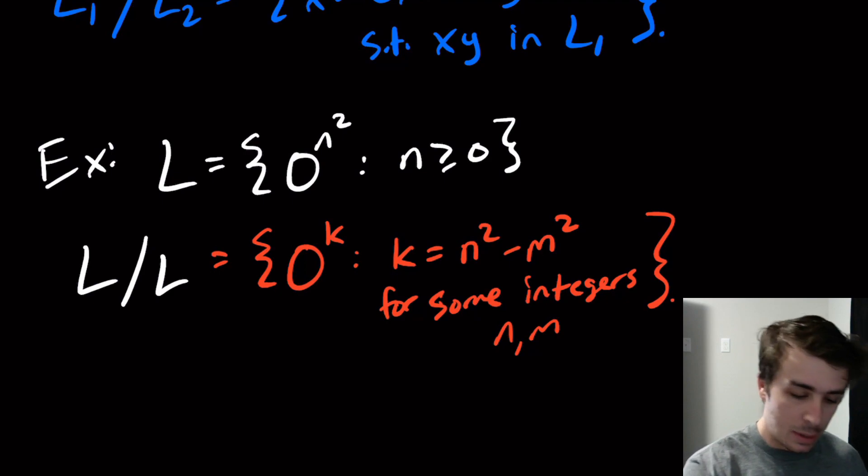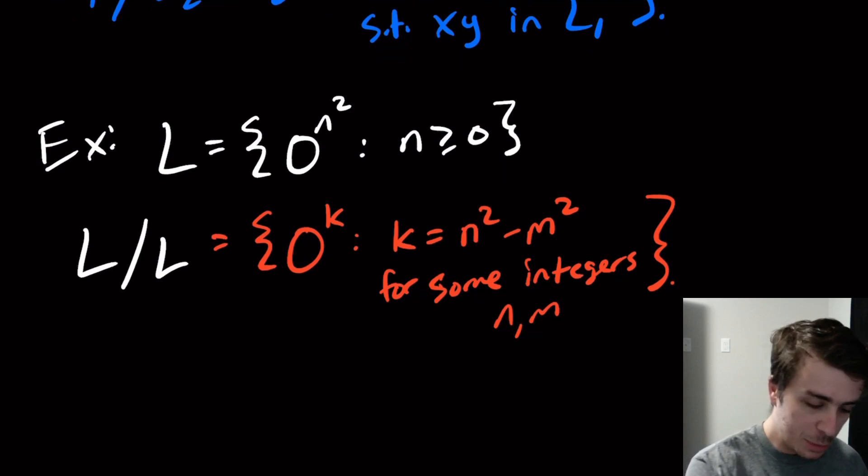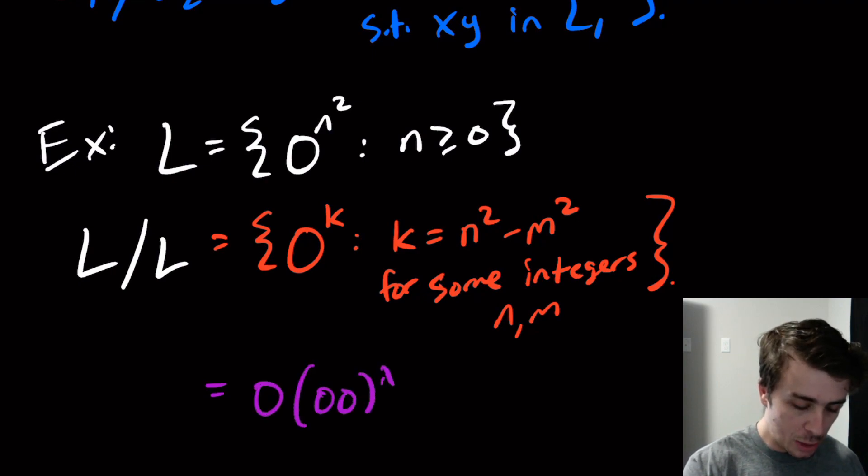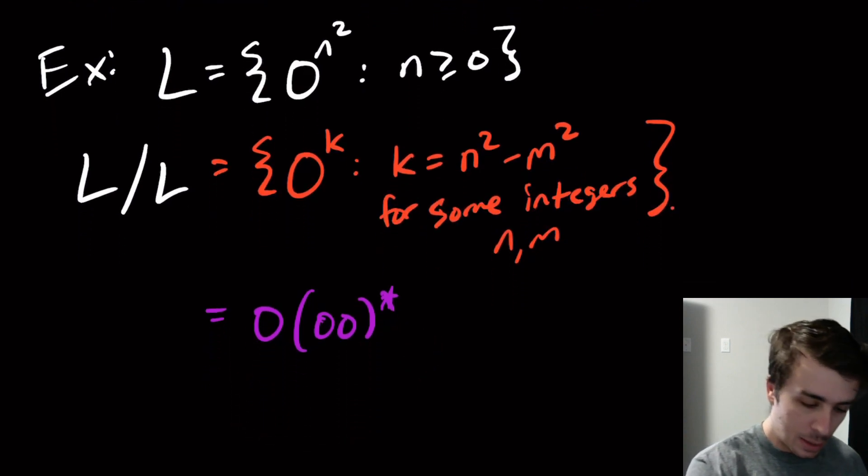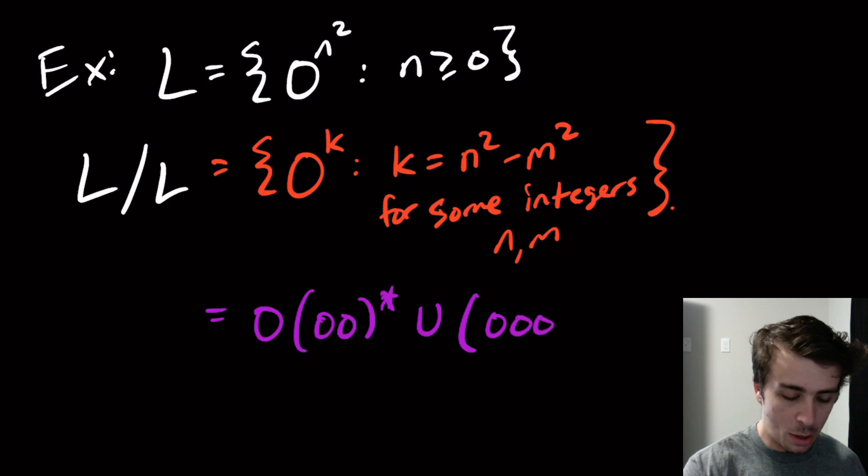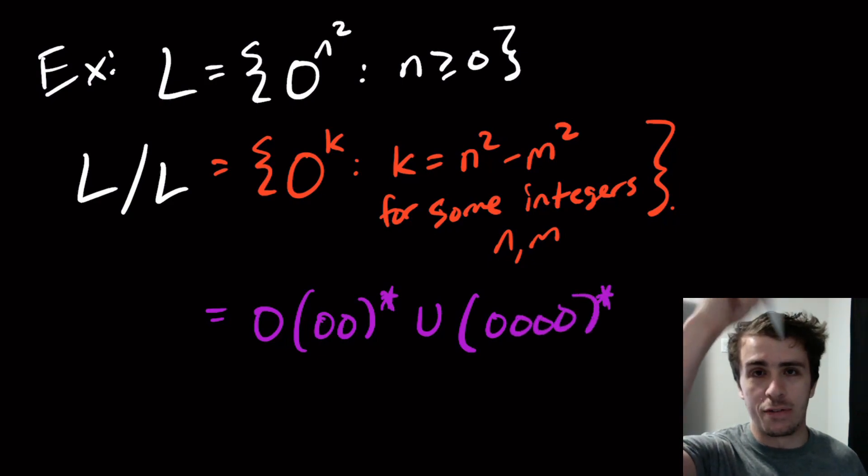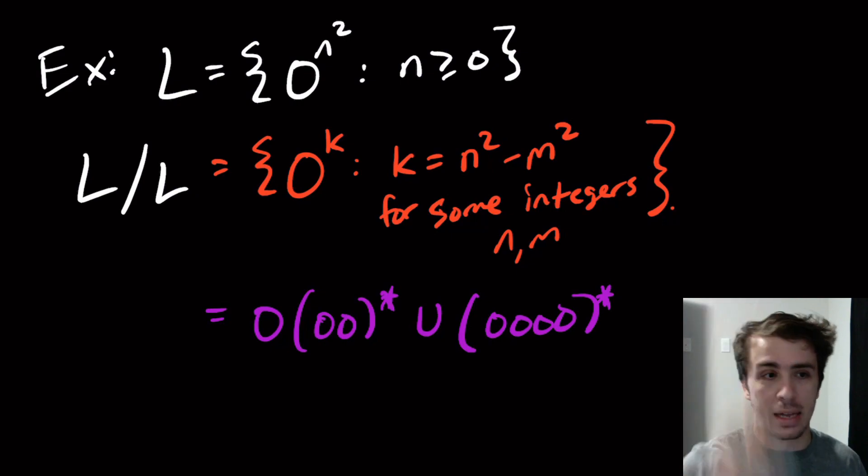Even though this language isn't regular, just as an example this language is regular because you can actually show that we can decompose this particular language into two sets, namely zero zero zero star, so all the strings of odd length, and then union all the strings that are a multiple of four. I invite you to actually figure out how to prove that in the comments.